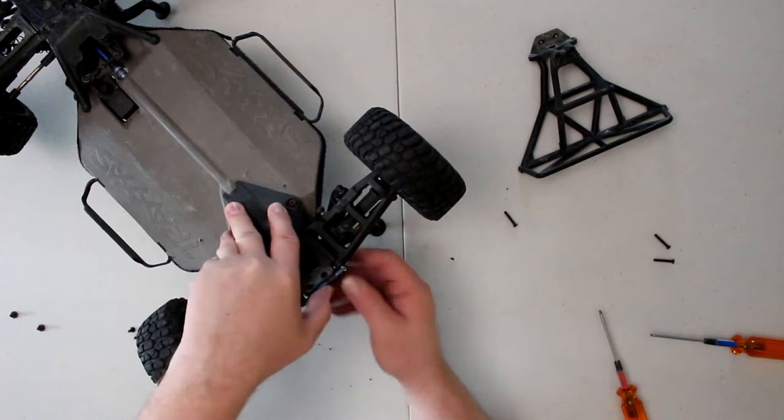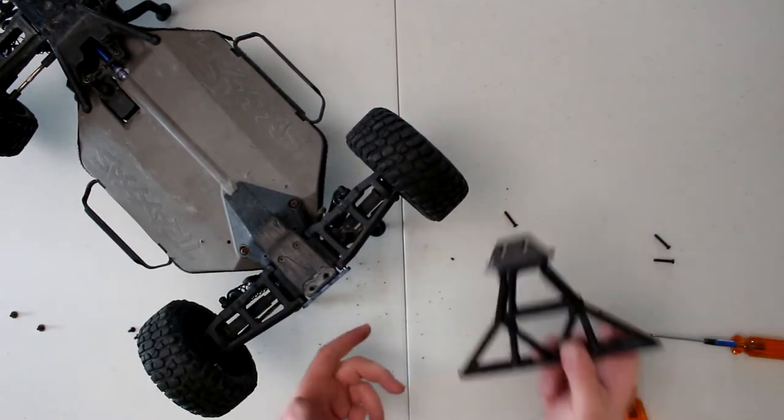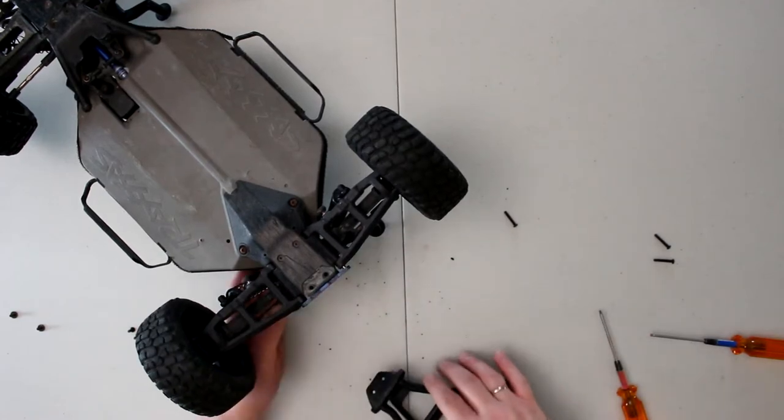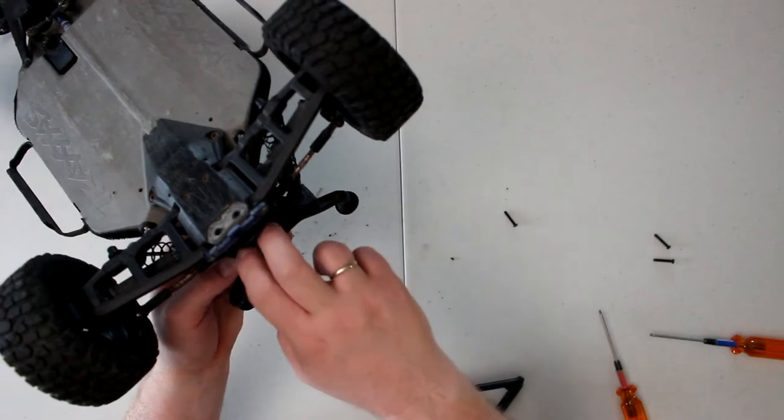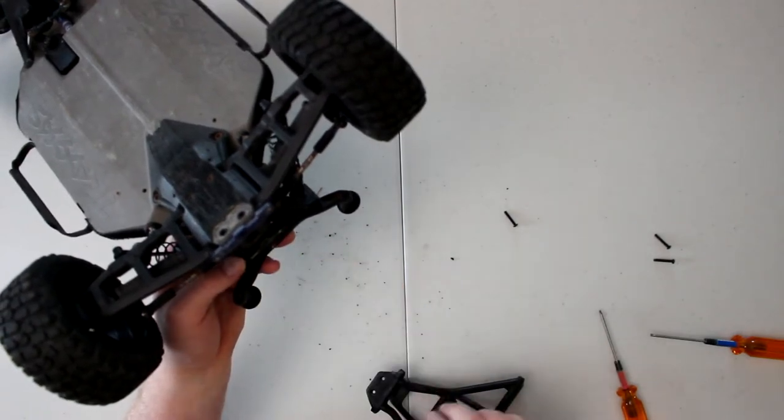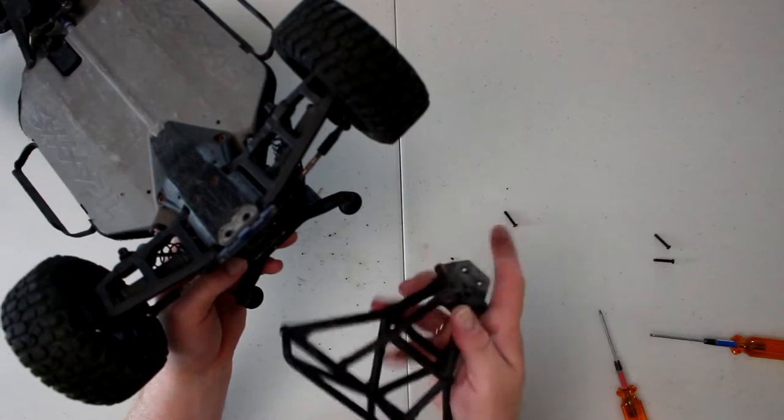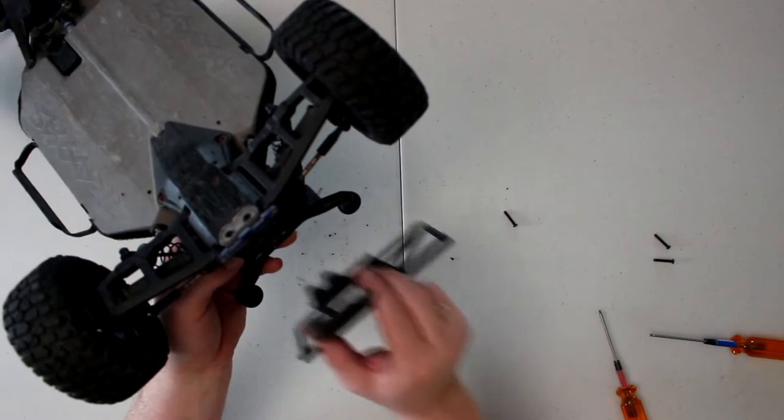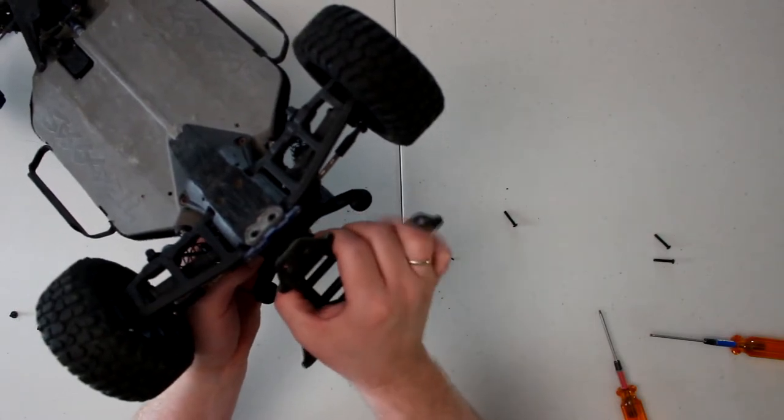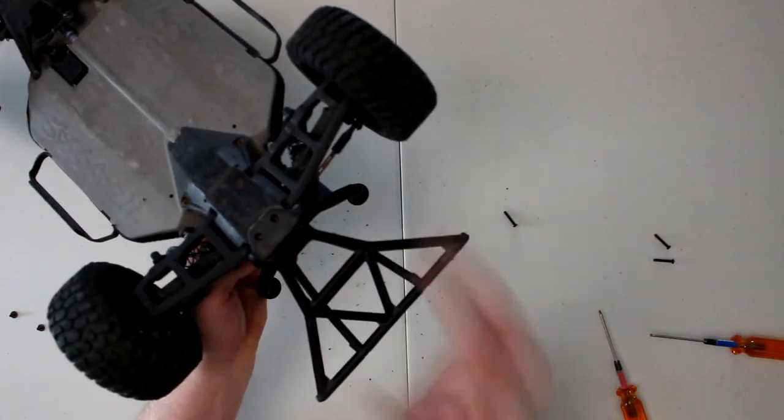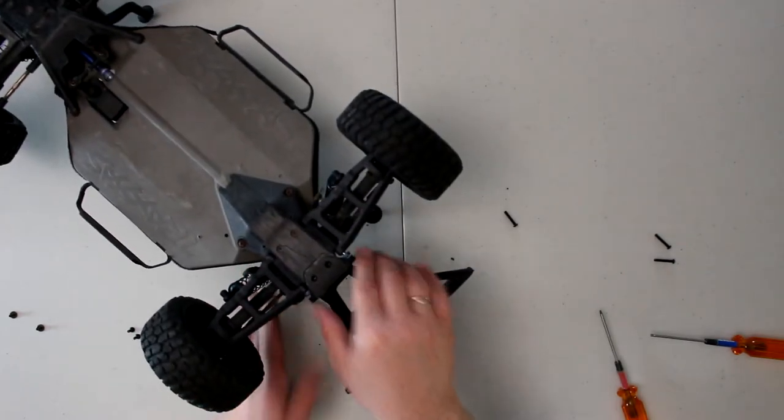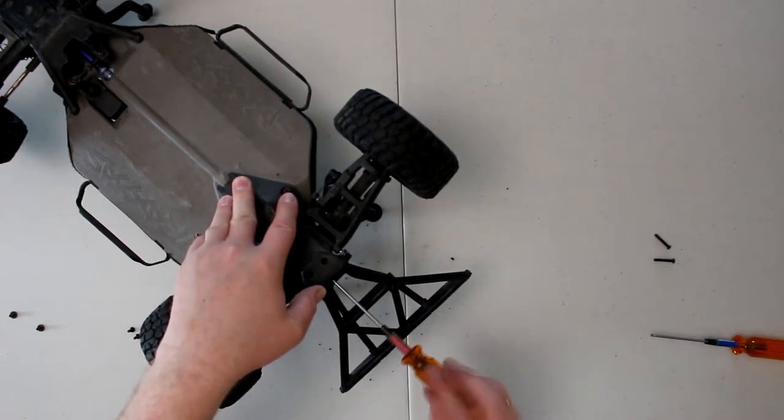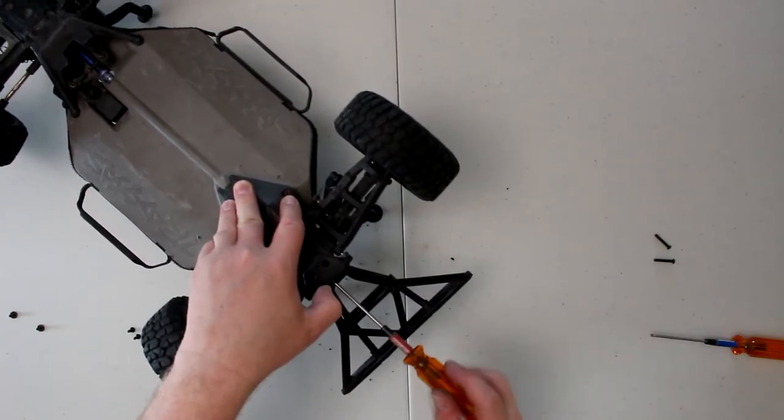Then you grab your new bumper. If it's the same from Traxxas here, it's kind of a keyed insertion, those inserts right here. What I do basically is come in at an angle underneath here and just kind of pop it in. Once that's in, I'll do the middle one this way, which pretty much holds it there.